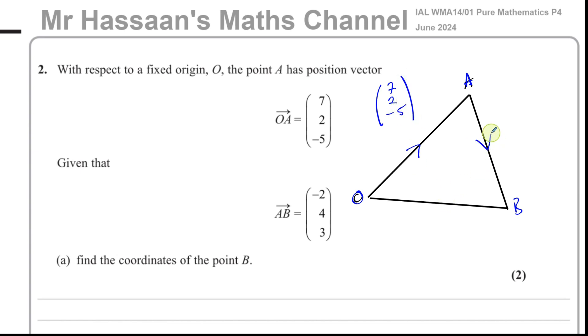This is OA, which is the vector 7, 2, negative 5. The vector from AB we're told is negative 2, 4, and 3. And what do they tell us to find? The coordinates of the point B.